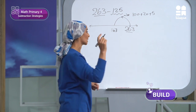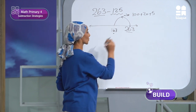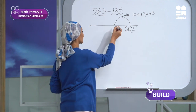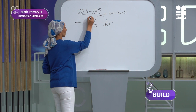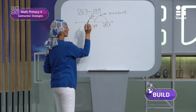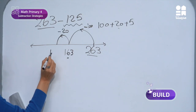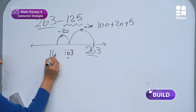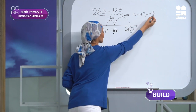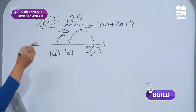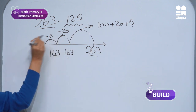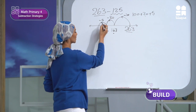Then I will make 163 minus 20, jumping 20 to the left. 60 minus 20 gives me a new number of 143. Then I will subtract 5, jumping another 5 to the left. So 143 minus 5.